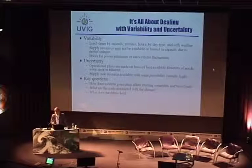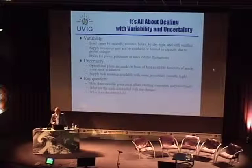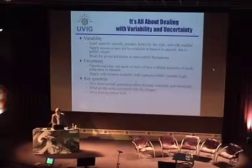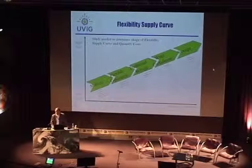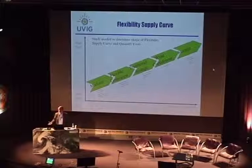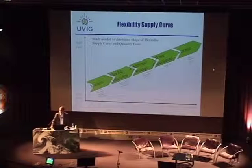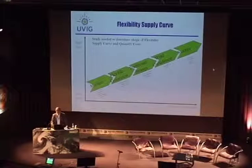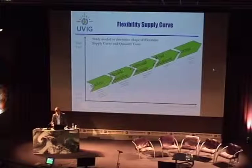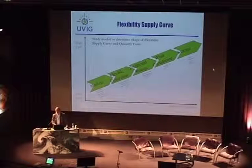The question is really how does variable generation affect the amount of variability and uncertainty, how does that affect power system operation, what are the costs, and what does the future look like as we get more variable generation? If you break out variability and uncertainty as the two key characteristics of renewable energy, then the two critical tools for dealing with them are flexibility and forecasting — flexibility for dealing with variability, forecasting for dealing with uncertainty.